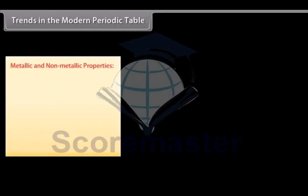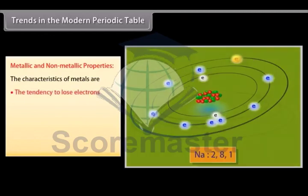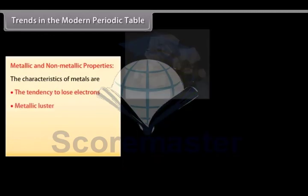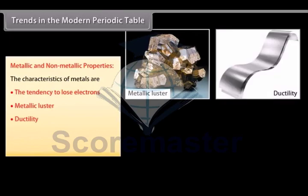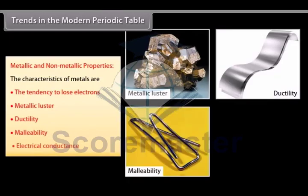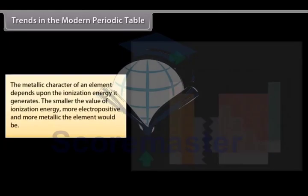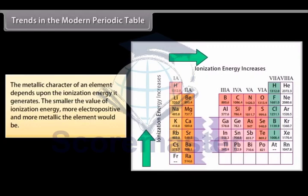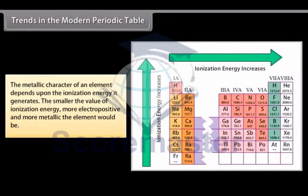Metallic and Non-metallic Properties. The characteristics of metals are its electropositive character, which means the tendency to lose electrons, metallic luster, ductility, malleability and electrical conductance. The metallic character of an element depends upon the ionization energy it generates. The smaller the value of ionization energy, more electropositive and more metallic the element would be.